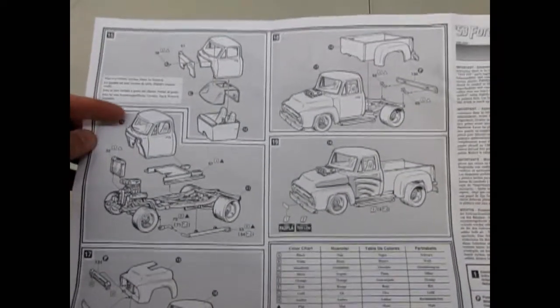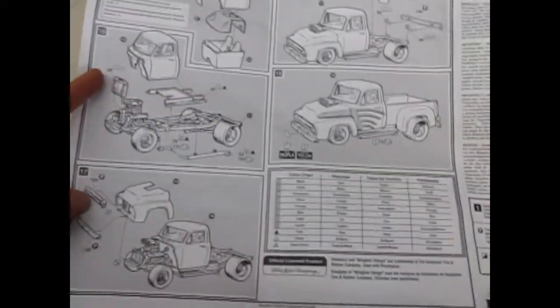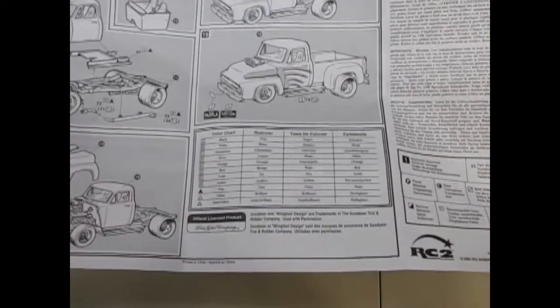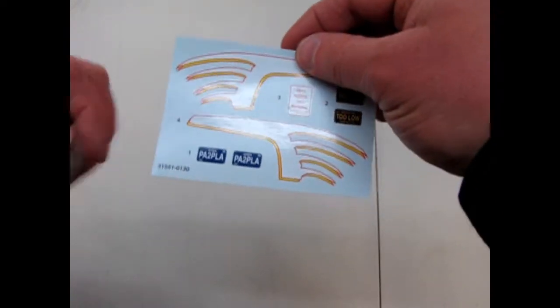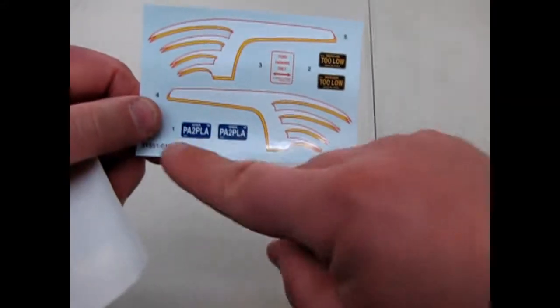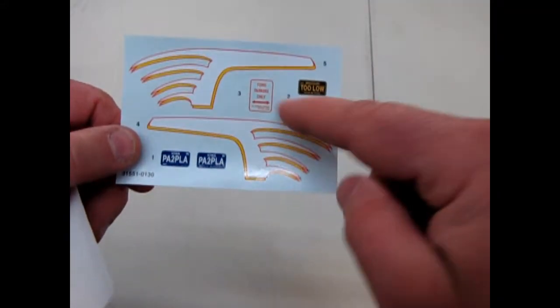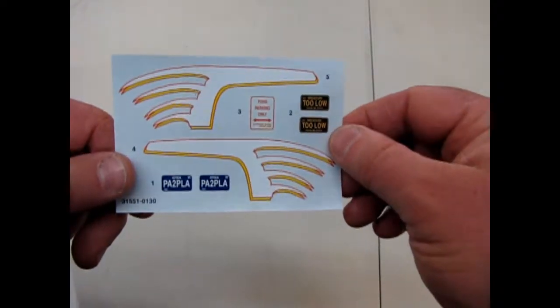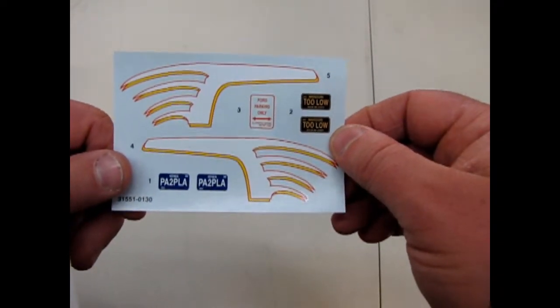And of course there's the body and everything going on that frame, and they also give you a paint color chart. So now let's examine our decal sheet. There you go: Pay to Play and Too Low. That's a little sign for putting on your own little plastic signs for Ford Parking Only, and these are some very nice white and yellow outlined scallops.